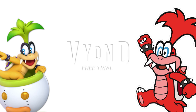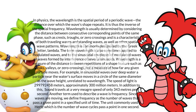In physics, the wavelength is the spatial period of a periodic wave — the distance over which the wave shape repeats. It is thus the inverse of the spatial frequency. Wavelength is usually determined by considering the distance between consecutive corresponding points of the same phase, such as crests, troughs, or zero crossings, and is a characteristic of both traveling waves and standing waves. Wavelength is commonly designated by the Greek letter lambda. Wavelength is a measure of the distance between repetitions of a shape feature such as peaks, valleys, or zero crossings, not a measure of how far any given particle moves.